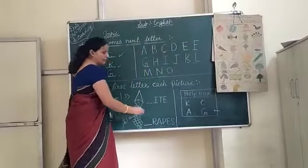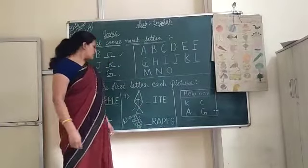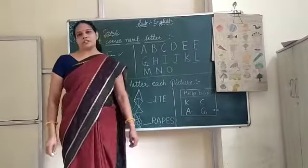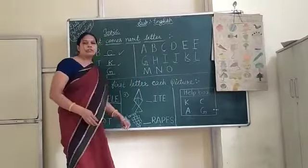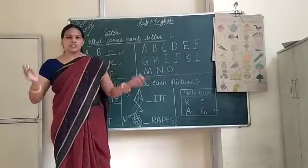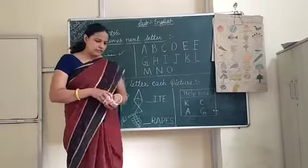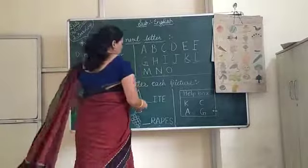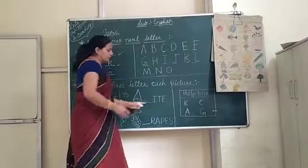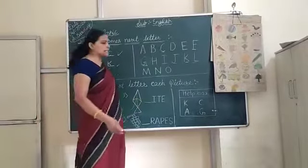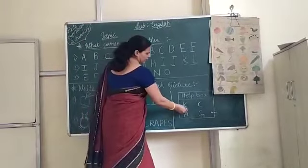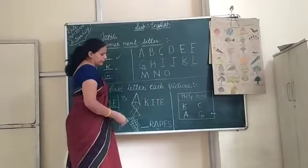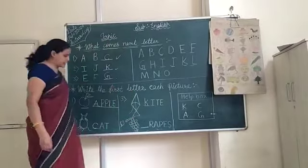The next picture is K for kite. K is missing. So where is the K letter? K is for kite. We complete this spelling and speak K, I, T, E — kite.